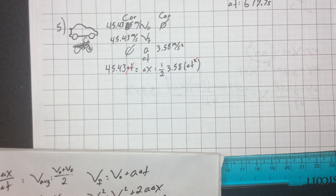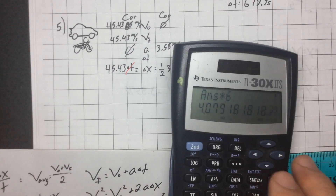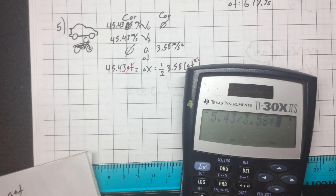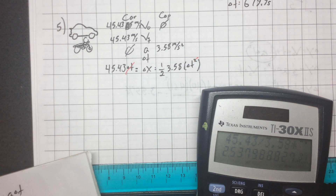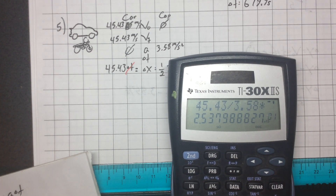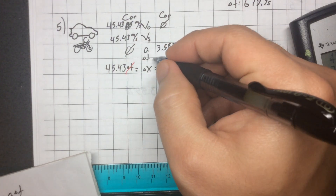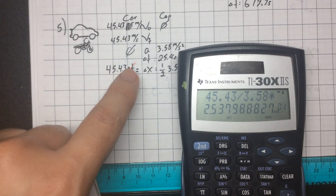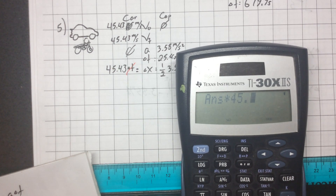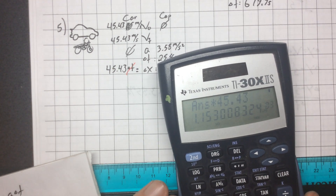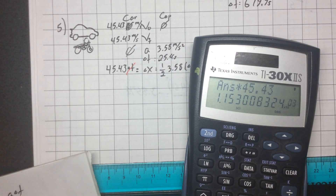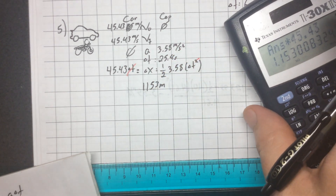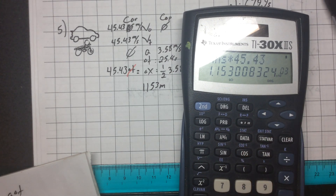That gives me a time of 25.4 seconds. If we know the time I can plug that in and get how far: 25.4 times 45.43 gives about 1,153 meters. So 1,153 meters is how far the car would travel before getting caught by the cop, or how far the cop would travel before catching the car.